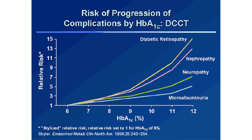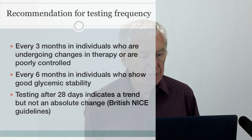Looking at a chart of A1c versus relative risk of complication — microalbuminuria, neuropathy, nephropathy, and diabetic retinopathy — as A1c increases, so does the relative risk. The reason the value of 7.0% was chosen is that at that value there is not much increase in the relative risk of diabetic complications.